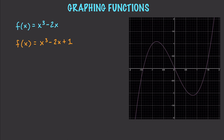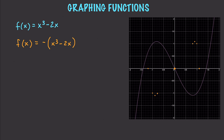What would happen if we multiplied a function by a negative value? In that situation, f(x) equals negative x cubed minus 2x. Basically, that's going to create a reflection of what we have. We're still going to hit our origin point in the center, and then our graph is going to be a reflection of what it was previously.